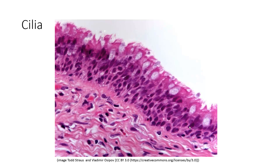The first is cilia. Cilia are these hair-like extensions that we see here on the apical surface of the cell. Just to orient you, this is the basal surface here, and this is the apical surface here. These little hair-like extensions coming off the apical surface of the cells — these are the cilia.